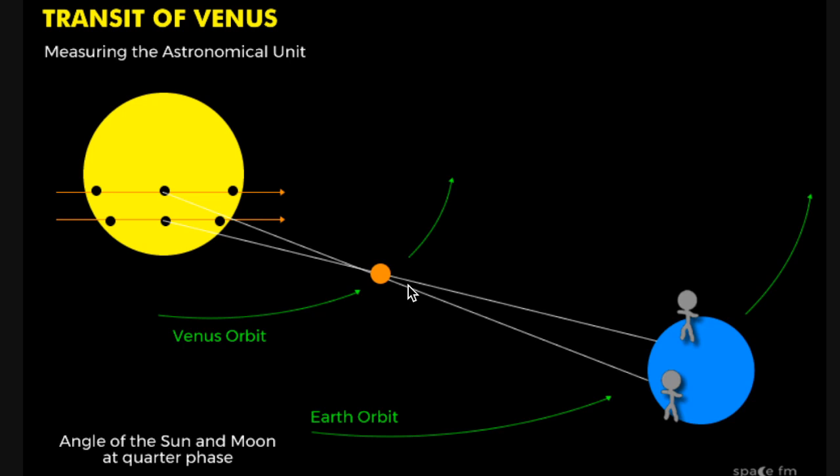With that, we know that angle. We determine the length between the center of the Earth and Venus. That's 0.28 astronomical units, so we divide it by 0.28, and that gives us the distance from the center of the Earth to the center of the sun.